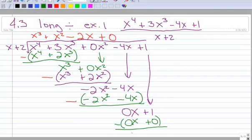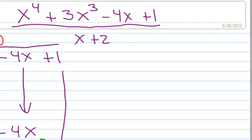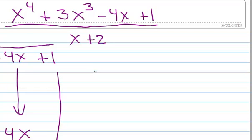0x minus 0x. Those have disappeared. 1 minus 0 is 1. So my remainder, let's talk about the remainder first, is 1.